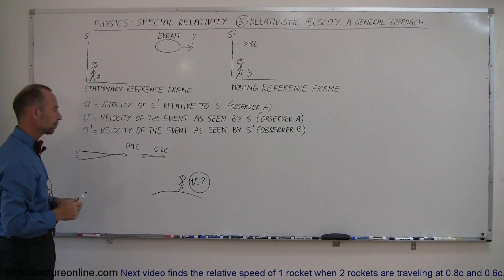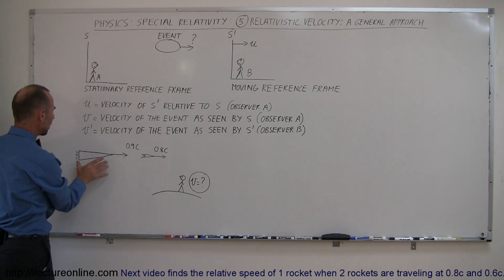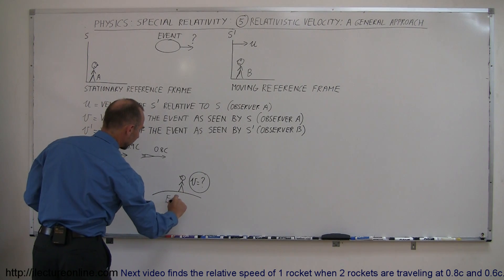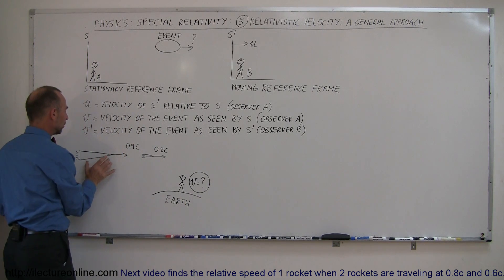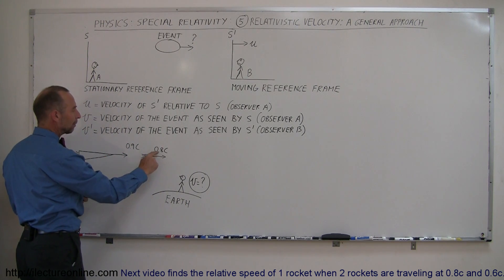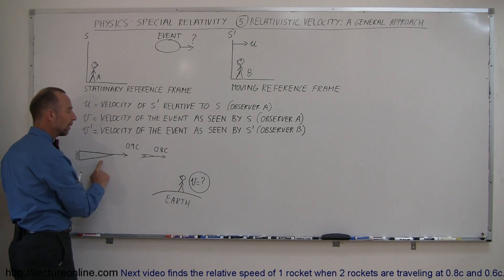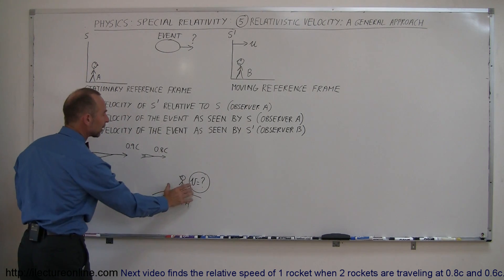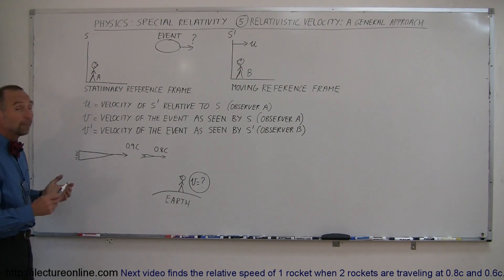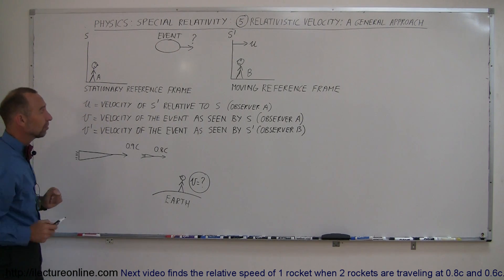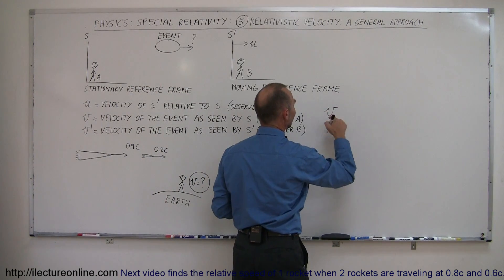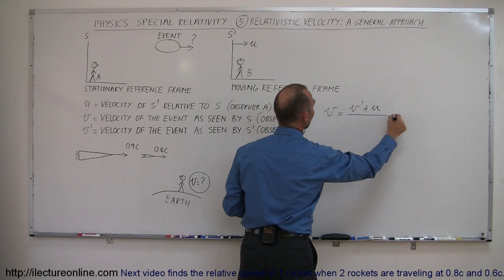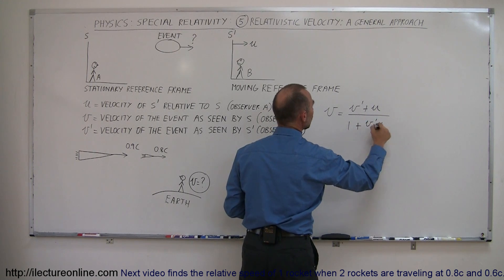As an example, let's say we have a spaceship moving at 0.9C relative to the Earth. Then let's say the spaceship shoots out a missile at 0.8C relative to the spaceship. How fast is this missile moving relative to the observer on the Earth? There's an equation that relates these to one another: the velocity as seen by the observer on the stationary reference frame equals V prime plus U, divided by 1 plus V prime times U over C squared.